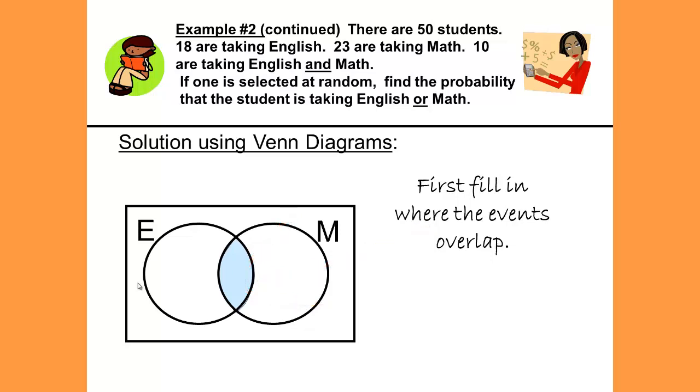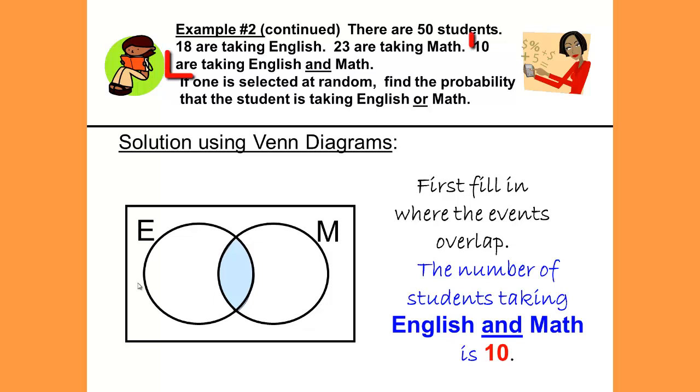The overlap is the intersection or the AND statement. So looking at our words, the number of students taking English AND math is 10. So we will place 10 in the overlap of our circle. As I help students know what to do first, knowing what to do first seems to be a stumbling block for those students. So always remember to start with that overlap.